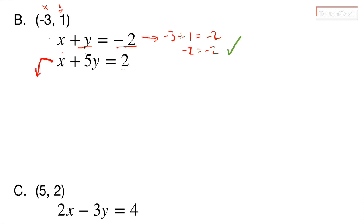But now let's look at the second one. So in this case, x is negative 3, plus 5 times 1, which is y, equals 2. And 5 times 1 is 5, so negative 3 plus 5 is actually 2, equals 2.